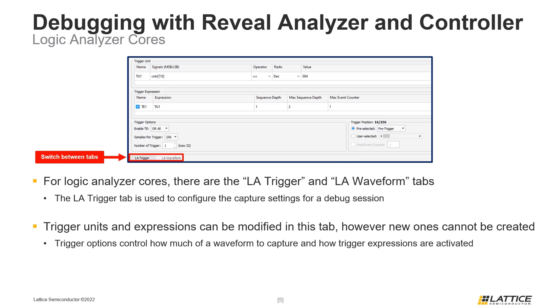At the very bottom of this tab are the Trigger Options. The trigger options for a debug session control how much of a waveform is captured and how trigger expressions are activated. The other section, called Trigger Position, can be used to change where the trigger appears by default in the LA Waveform tab.